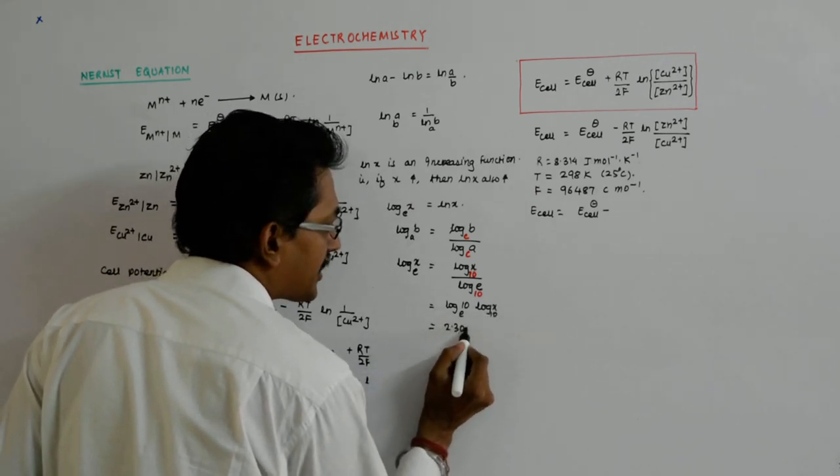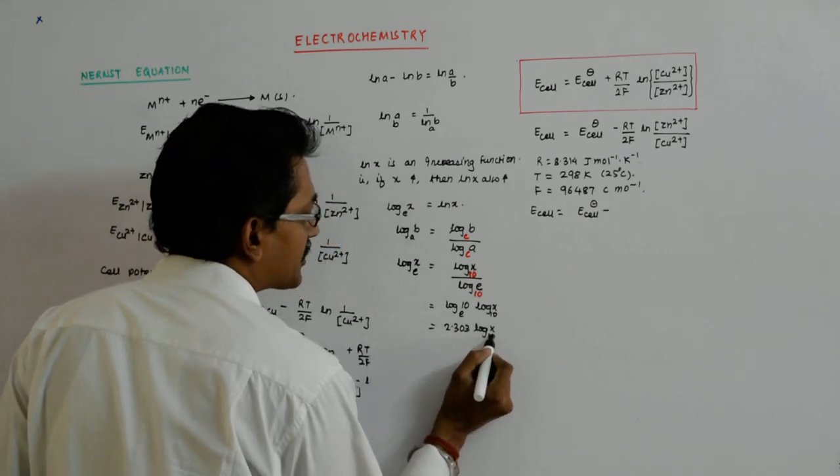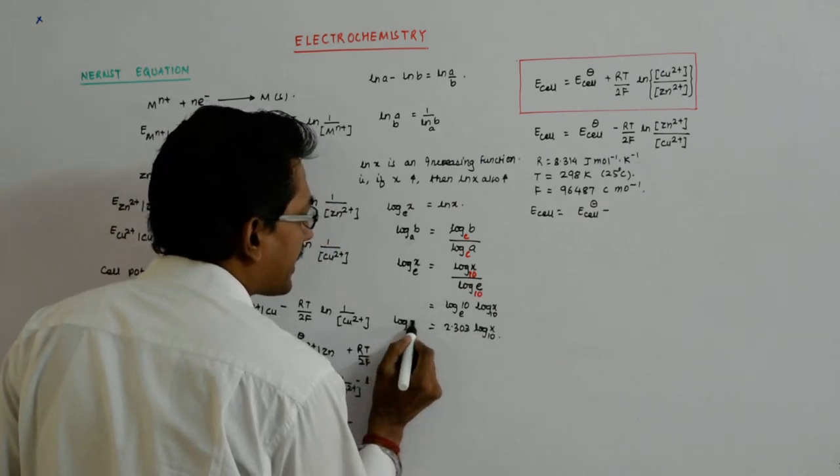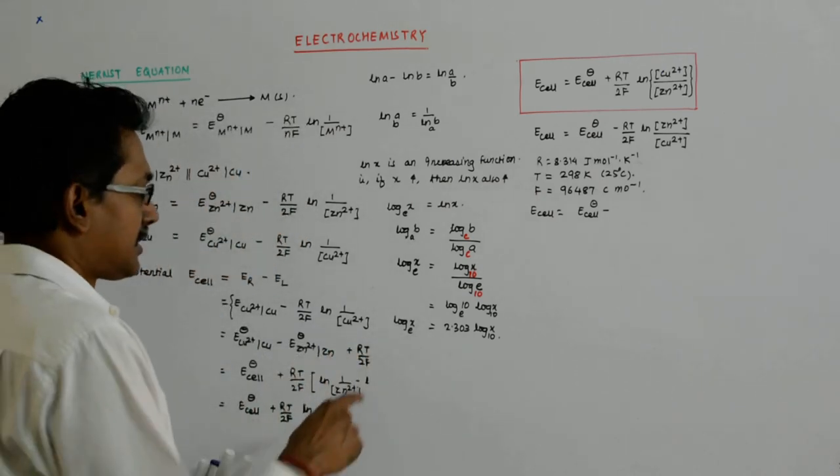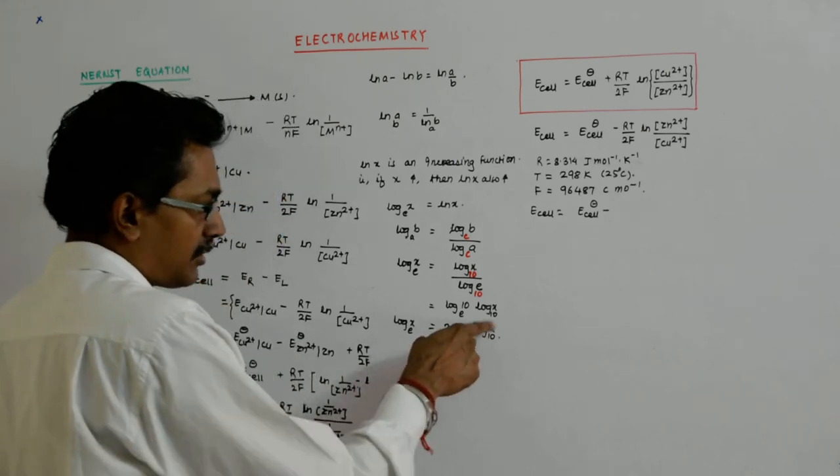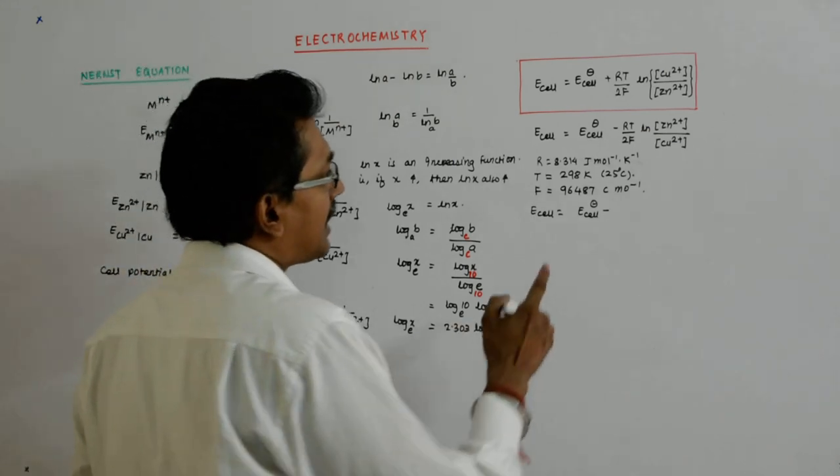This value is actually 2.303 log x base 10. So this is a side formula you should know: log x base e is equal to 2.303 log x base 10.